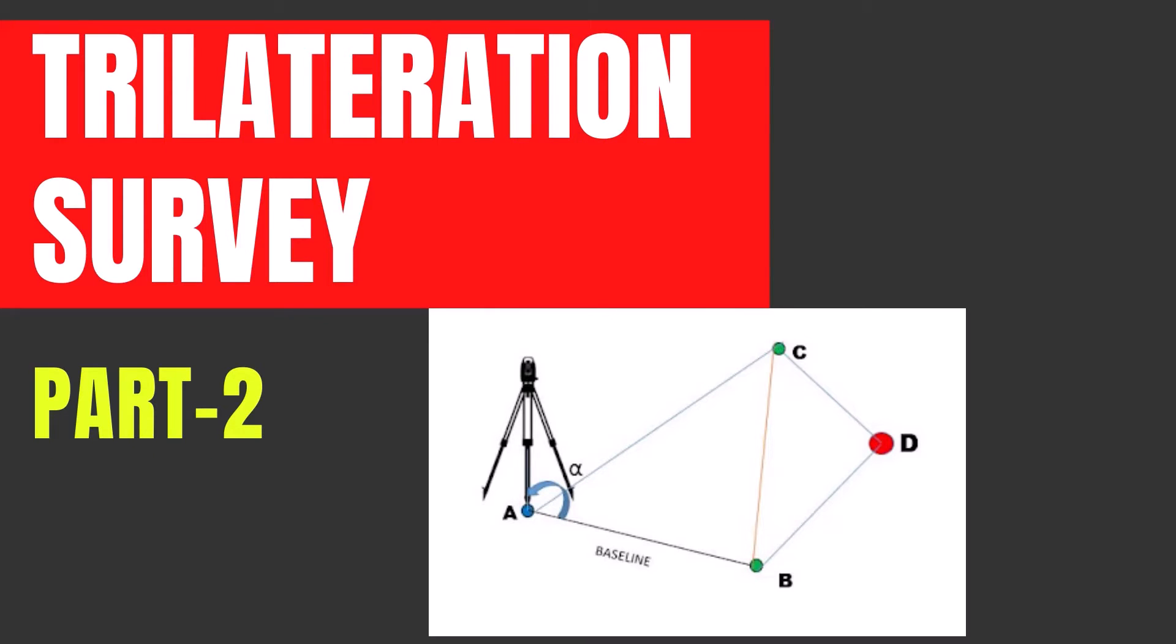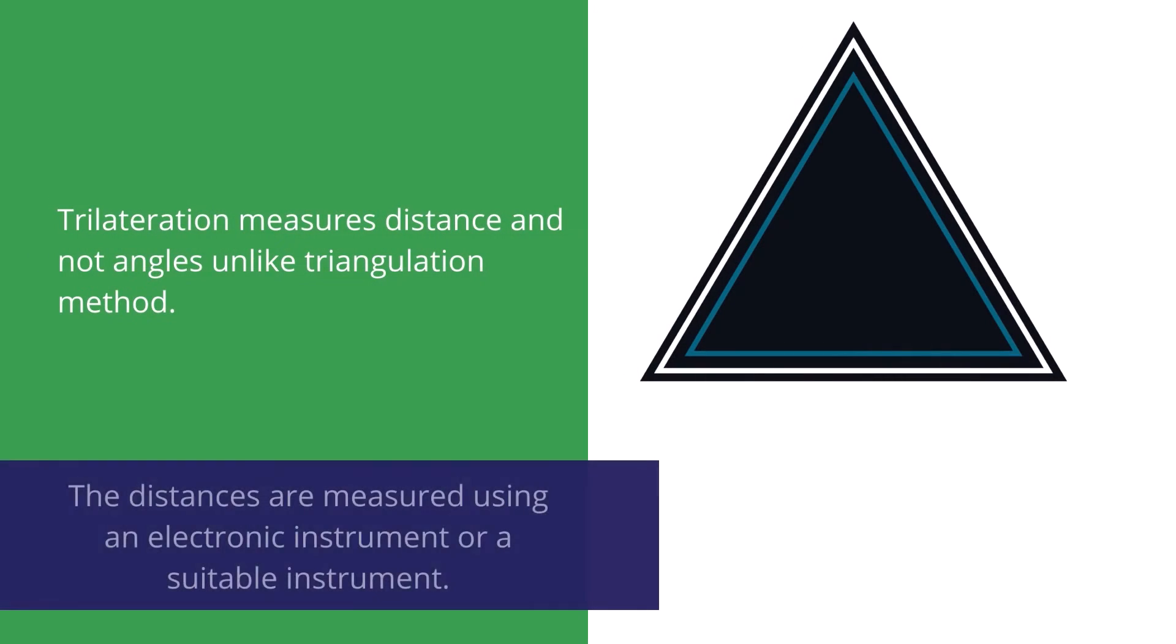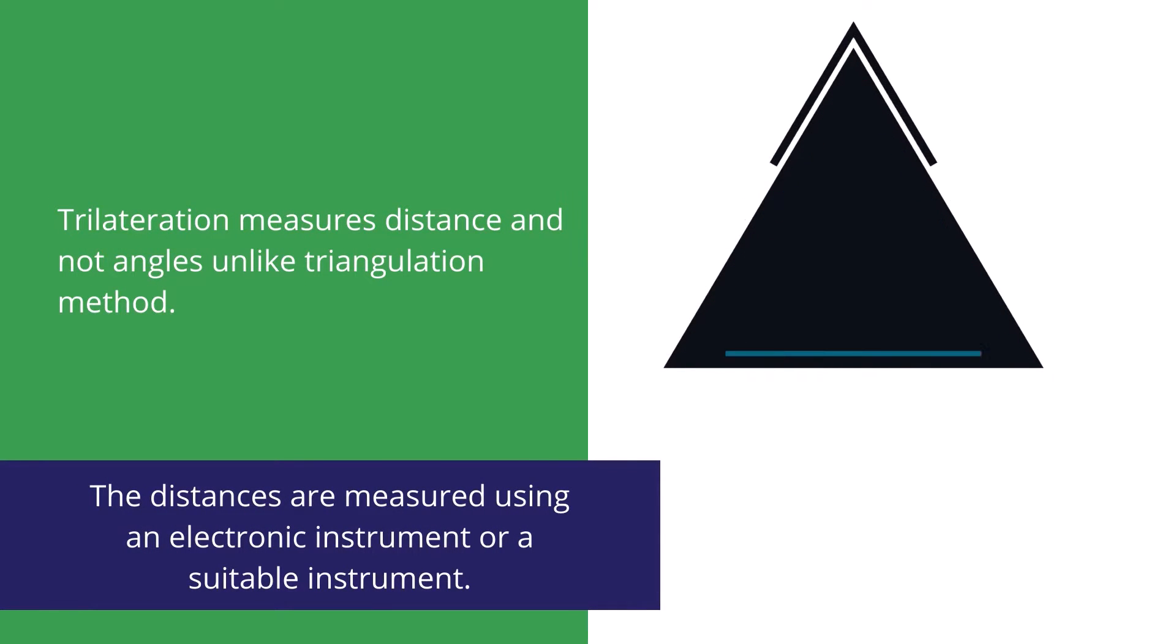How to locate a point using trilateration surveying? Trilateration is an alternative to triangulation that relies only on distance measurement.